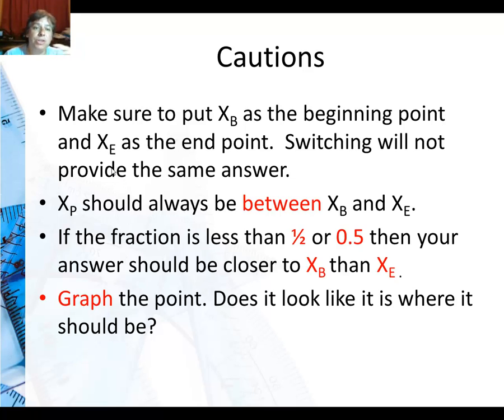So some cautions when doing this. Make sure to put x of b as the beginning point and x of e as the end point. Wherever you're starting from, that's your beginning point. You could start from a higher value and go to a lower value. So I could have started at mile marker 255 and then gone to 243. So x of b would be 255. In cases where you start at a higher value and go to a lower value, that value in parentheses is going to be negative. And that's okay. It'll work out in the formula because of the postulate.